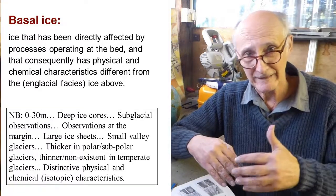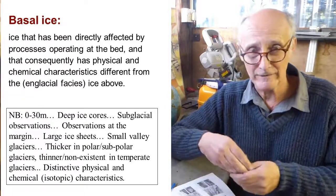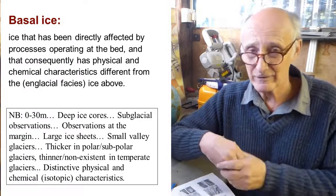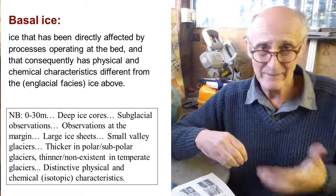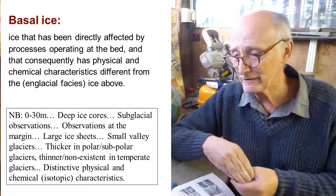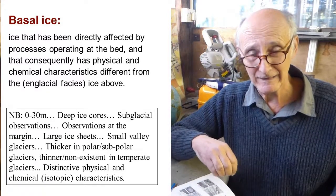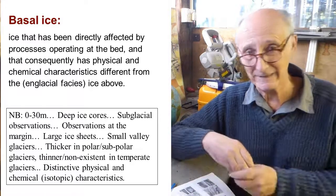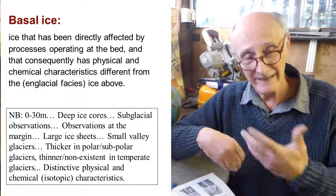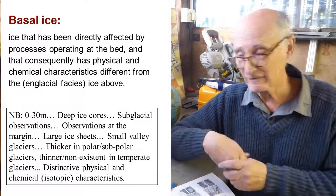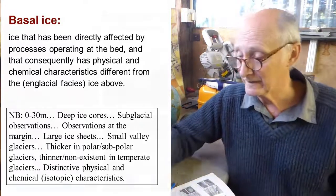In order to generate a decent basal ice layer, you need to be accreting material at the bed — adding material at the bed rather than losing material. So if you're melting off lots of ice at the base of the glacier in a temperate thermal regime, that's not conducive to the formation of a thick basal ice layer. The basal ice has distinctive physical and chemical characteristics, including stable isotopes, and we can use those characteristics to reconstruct how the basal ice layer is being created, to infer processes happening in the glacier interior, and to think about how those characteristics impact glacier dynamics and glacial geomorphology.